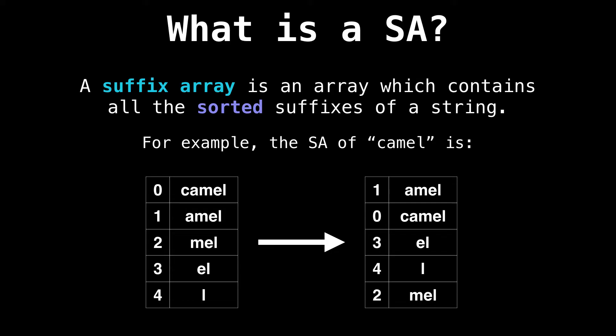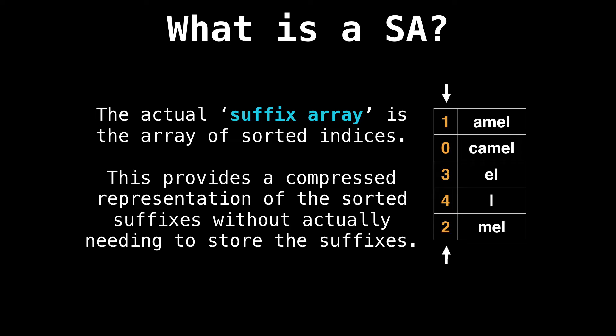Suppose you want to find the suffix array for the word 'camel.' On the left, I constructed a table with all the suffixes of 'camel' and the indices of where that particular suffix started in the string. Then on the right-hand side, I sorted all the suffixes in lexicographic order in a table.